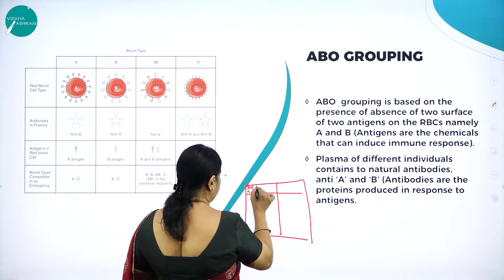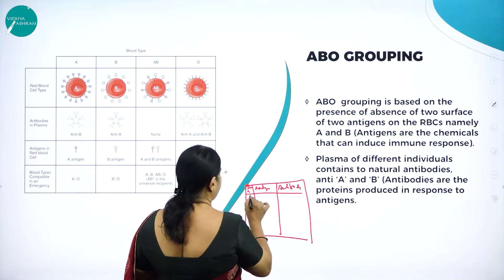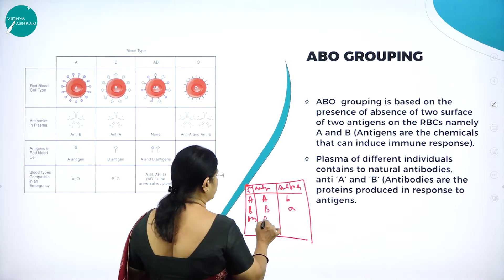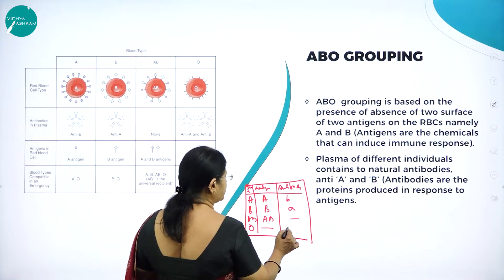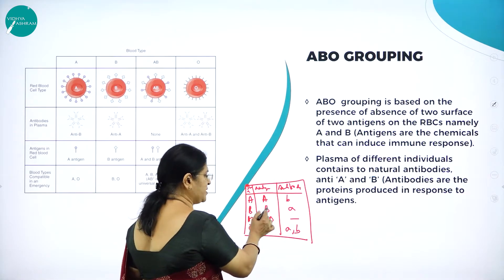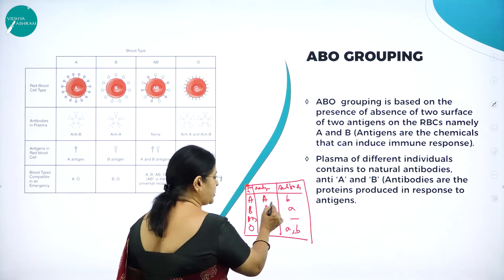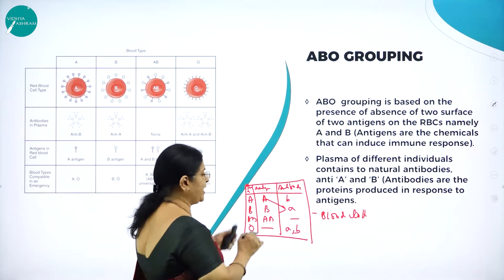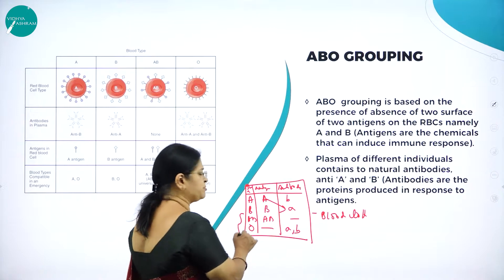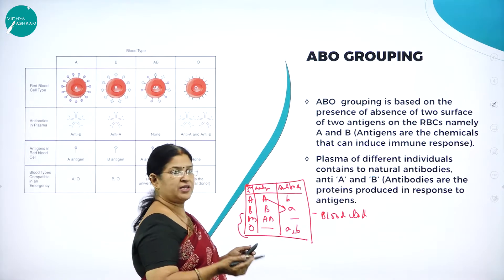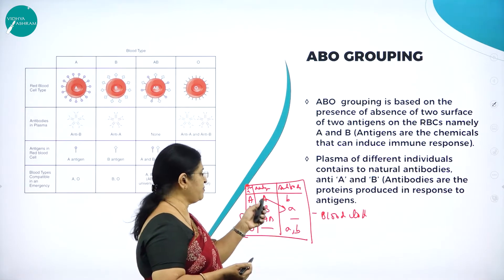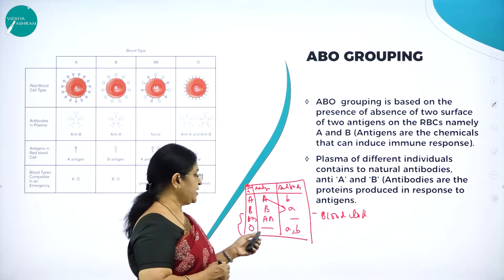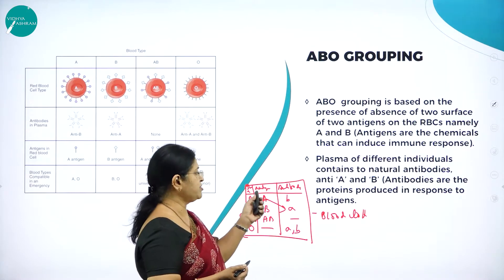In the tabular column: blood group A has antigen A and antibody B. Blood group B has antigen B and antibody A. Blood group AB has both antigens A and B but none of the antibodies. Blood group O has none of the antigens but has both antibodies A and B. If antigen A comes in contact with antibody A, blood will clot — that is why A group cannot give for B.